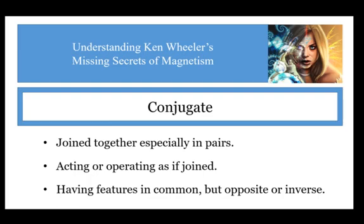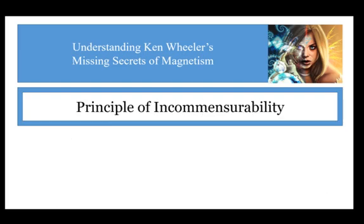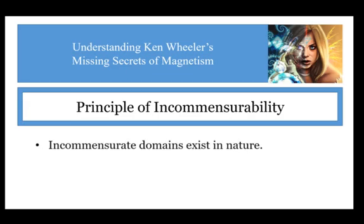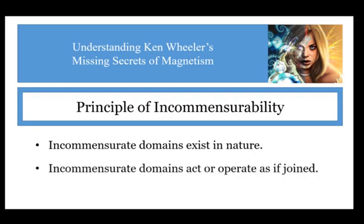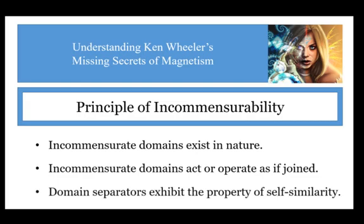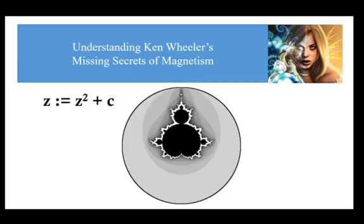This is the principle of incommensurability, which states the following: incommensurate domains exist in nature; incommensurate domains act or operate as if joined; and domain separators exhibit the property of self-similarity — in other words, they are fractal. This last point is my contribution to Ken Wheeler's missing secrets of magnetism. In the previous video, I talked about how I came to understand the principle of incommensurability and indirectly the concepts of space and counterspace via the mathematical fractal called the Mandelbrot set. I will be using this as a teaching tool to help you understand and visualize these concepts.